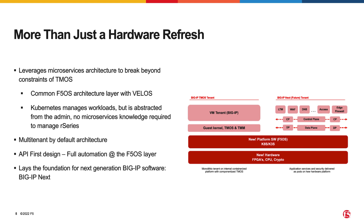The platform layer includes basic system and network settings as well as licensing. The R-Series has more modern FPGAs and CPUs to help provide hardware acceleration and more advanced crypto offload capabilities. It is important to note that the R-Series appliances are multi-tenant by default. The new F5OS platform layer allows R-Series to run different types of tenants within the same appliance.